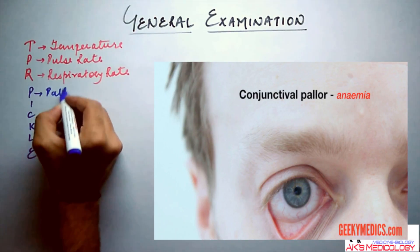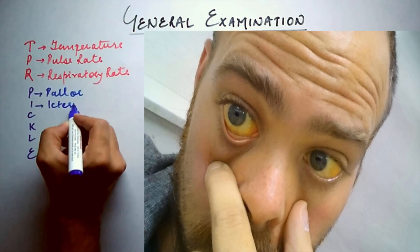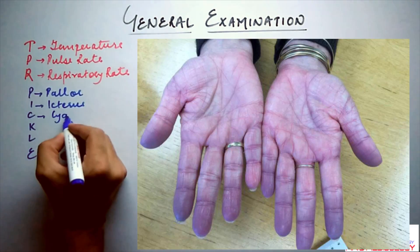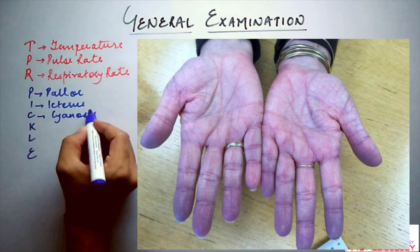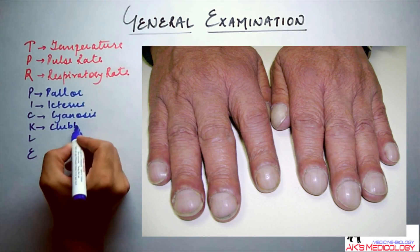P stands for pallor. I stands for icterus. C for cyanosis. K here is a misnomer and actually stands for clubbing.